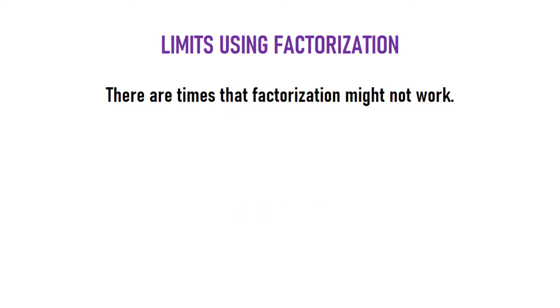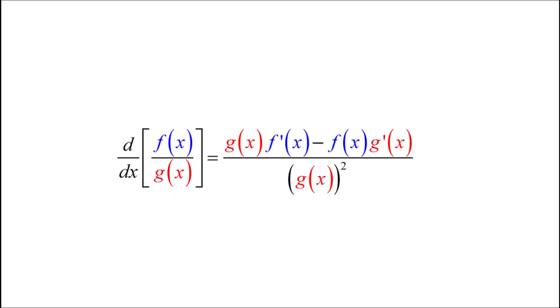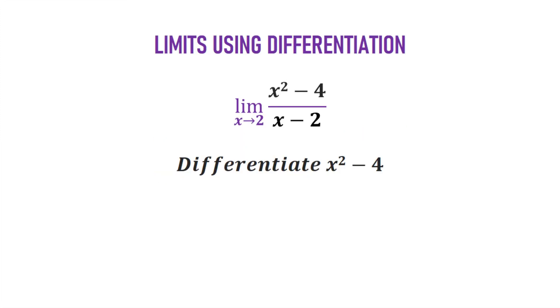There are times that the factorization might not work. Then try differentiation. Differentiation might be a strange topic to you yet, but we are going to reiterate it in videos to come. So you don't have to worry. And if you already know about it, then all good. Now, to differentiate x squared minus 4 divided by x minus 2, we have to do them individually, not using the quotient rule. Because there is something called quotient rule differentiation. And in case you don't even know quotient rule, then you don't have any problem. Just forget it. We don't actually need it here. To solve this, they are going to be differentiated individually.